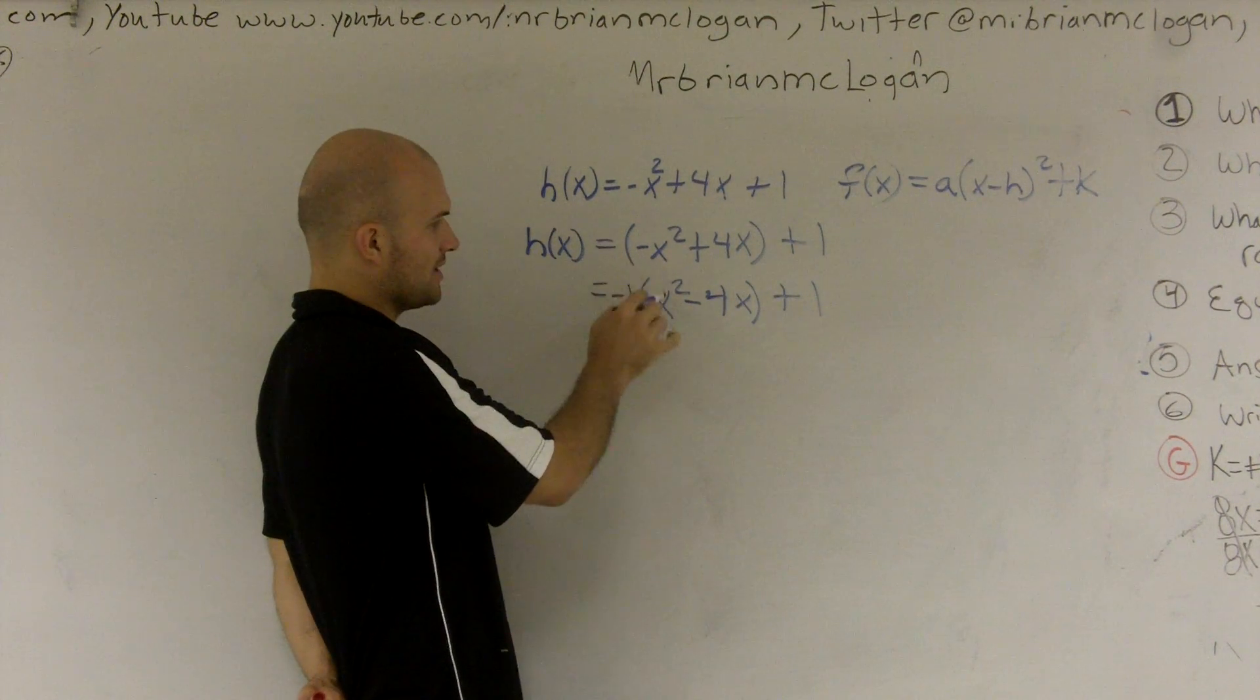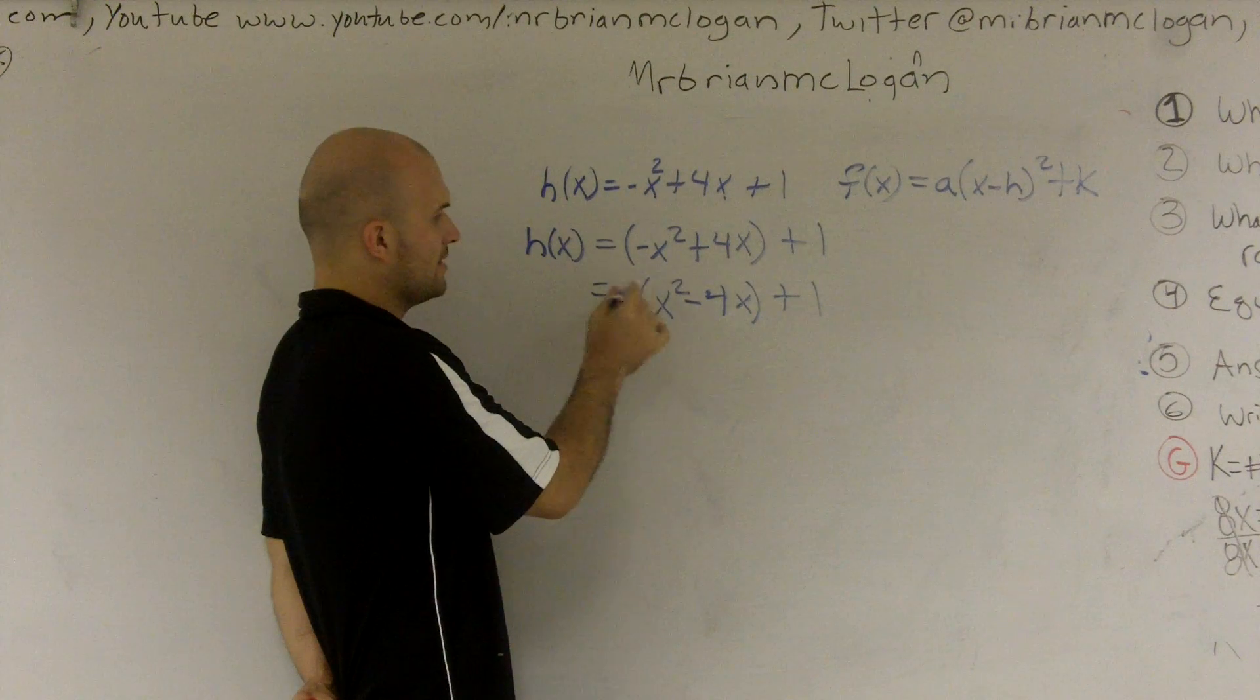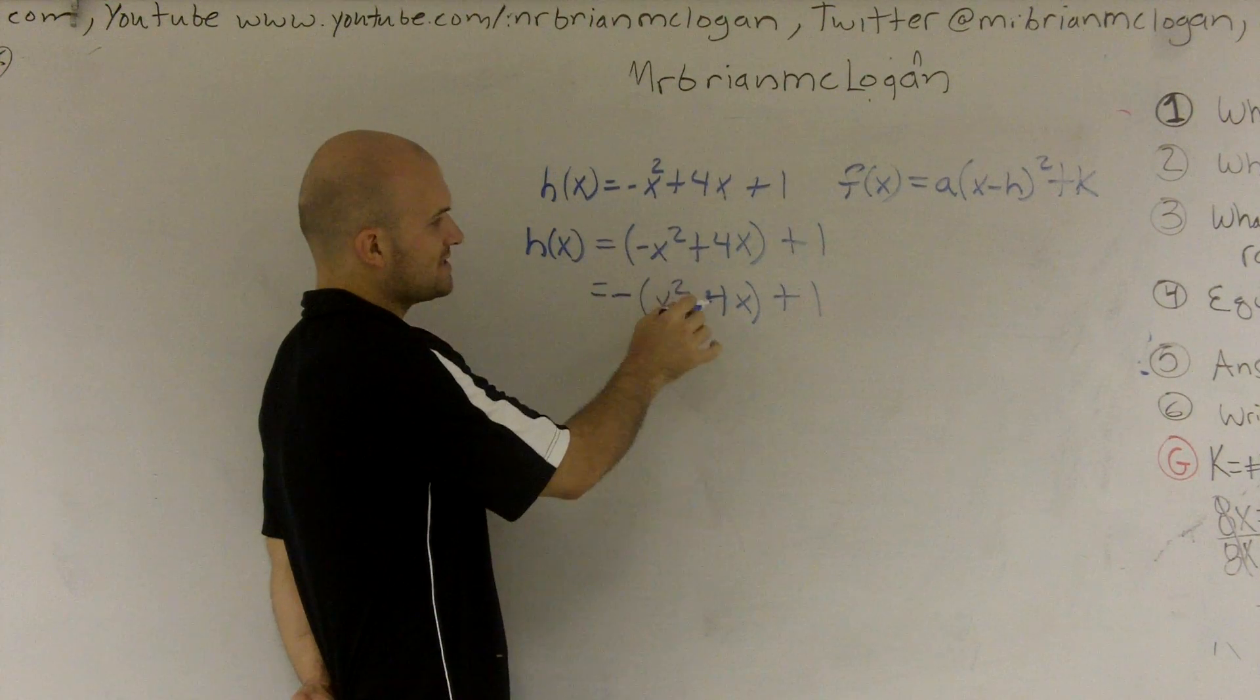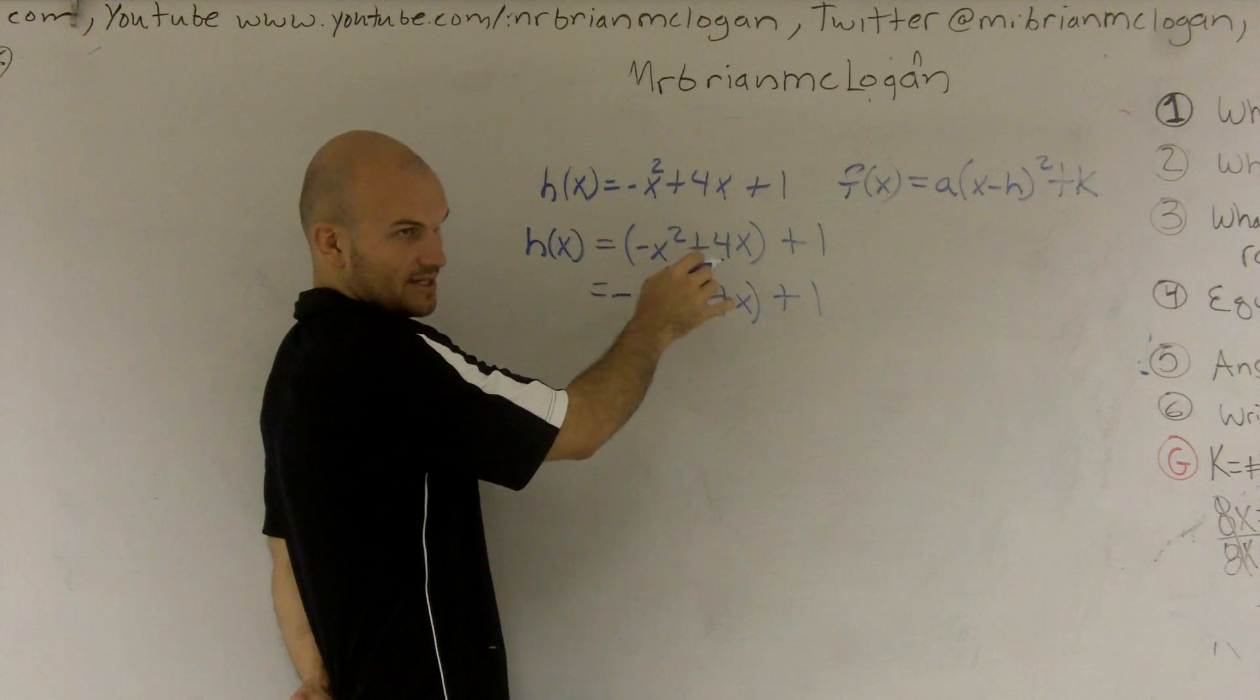Got it? Because if I was to multiply this negative 1, which I don't really need to write, this negative 1 times x squared is negative x squared. Negative 1 times negative 4x is a positive 4x. Does that make sense? All right.